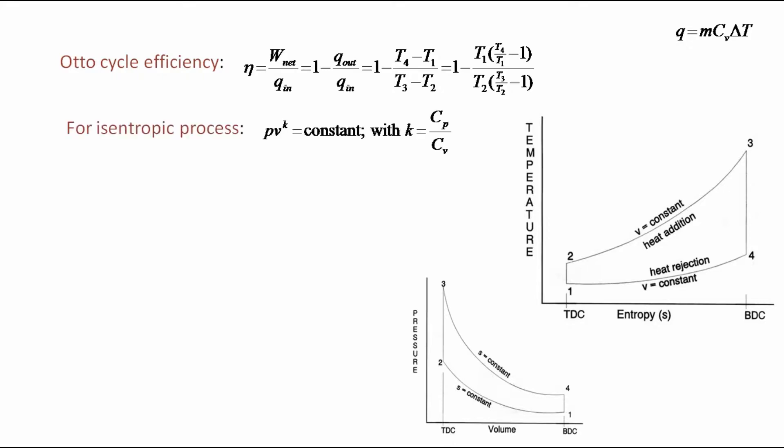For isentropic process PV^k is equal to constant where k is equal to Cp by Cv which are specific heat at constant pressure and constant volume respectively.